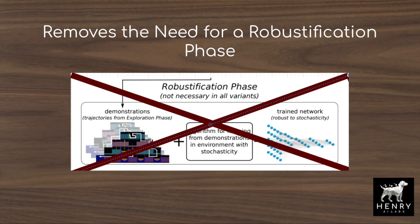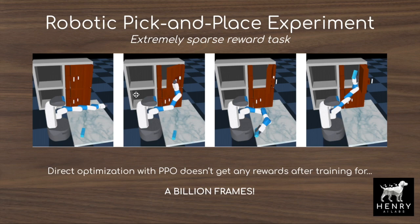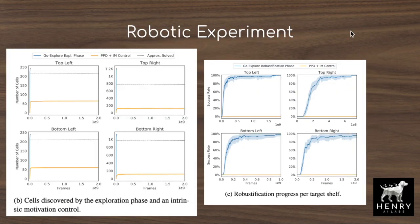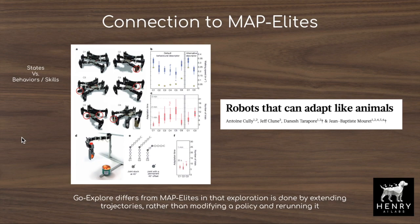The authors test First Return, Then Explore on the robotic pick-and-place task, an extremely sparse reward environment starting with an object on a table that must be grasped and placed onto one of four shelves. Direct optimization with PPO does not solve this environment even after training for a billion frames. Charts compare the GoExplore exploration phase against PPO with count-based intrinsic motivation, showing how much better GoExplore performs at reaching all shelf positions, and further showing the explore-then-robustify pipeline outperforming direct optimization.